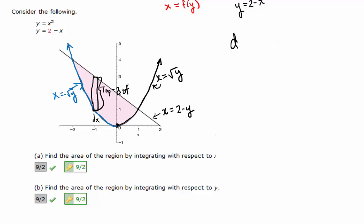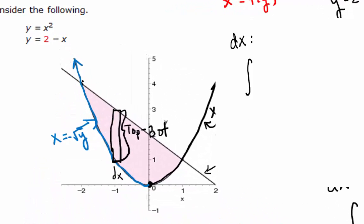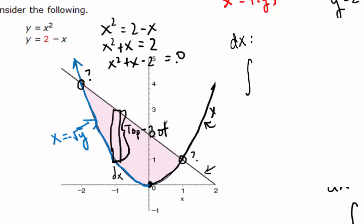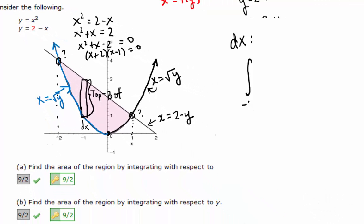This is the dx version of the integral. We're going to go from what value to what value — I haven't figured that out yet. How would I find that? Points of intersection. Let's do that quickly. x squared equals 2 minus x, so x squared plus x equals 2, meaning x squared plus x minus 2 equals 0. Does that factor? x plus 2 times x minus 1 equals 0. So our x values — the points of intersection — are negative 2 and 1. So we're going to go from negative 2 to 1.